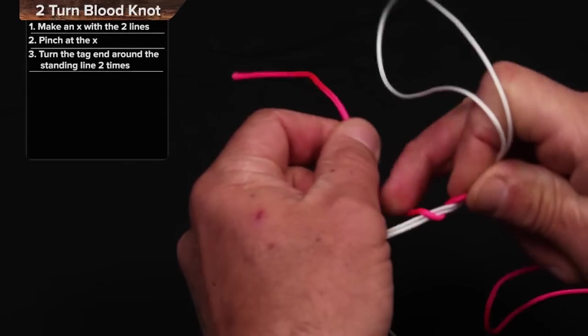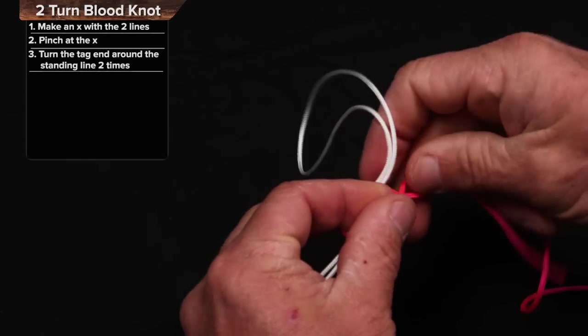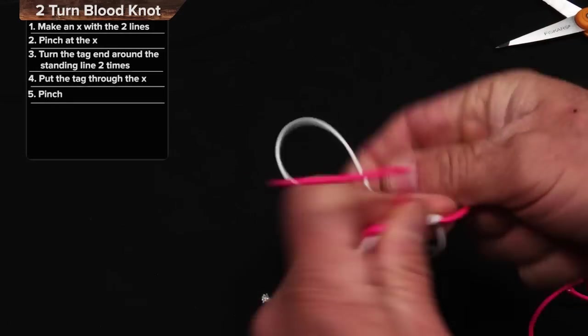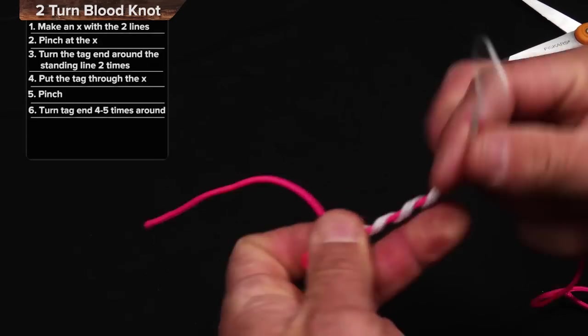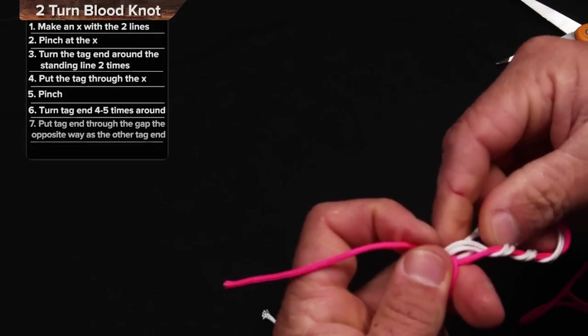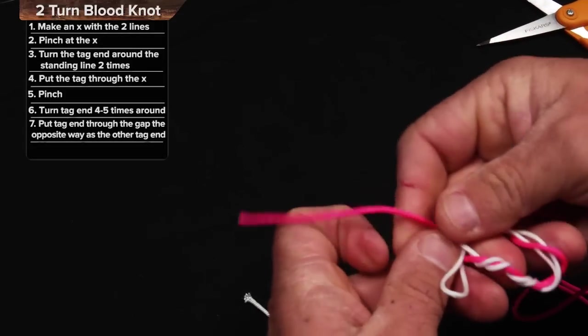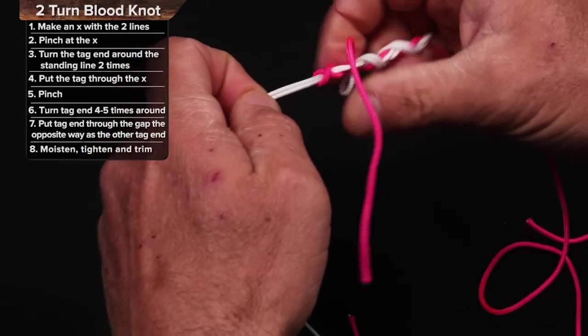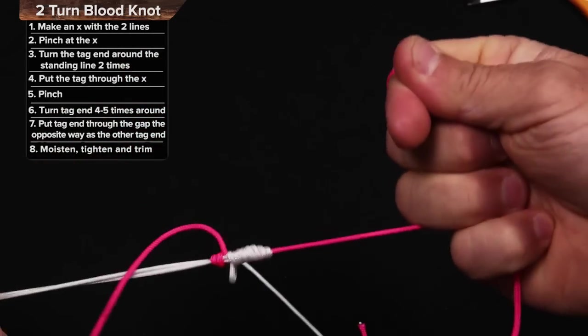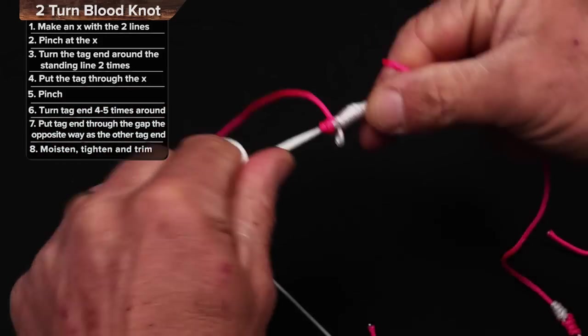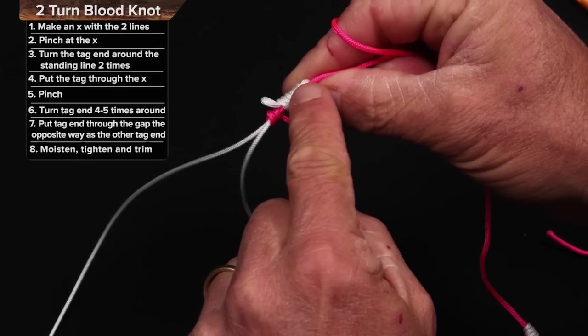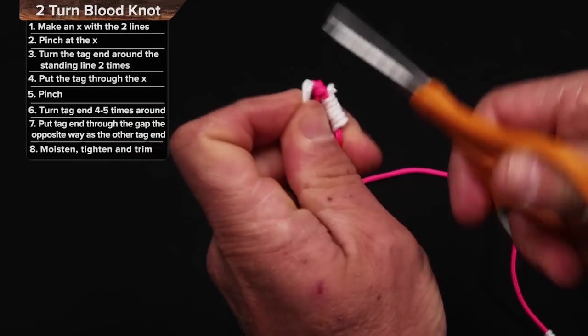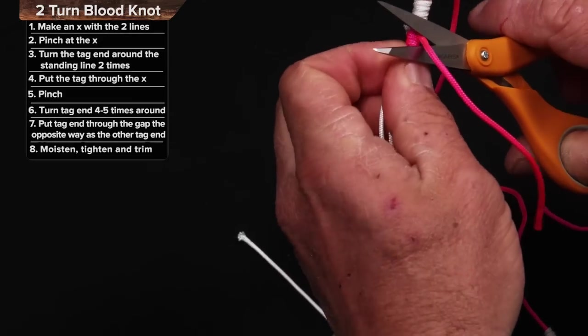I'm going to do the same thing except I'm only going to take two turns with the pink. One, two. Put that right through here. That's my 80 pound and then with my 20 pound doubled I would take four or five turns. Then I'll put this back through the opposite way just like I did with the other one. So now I have two turns here, four turns here.